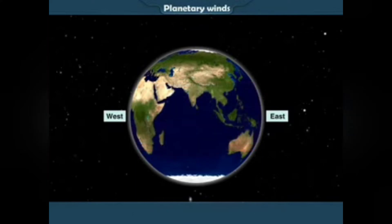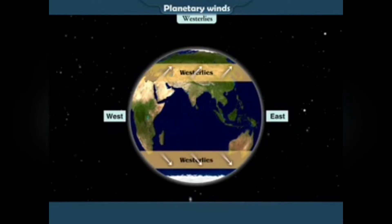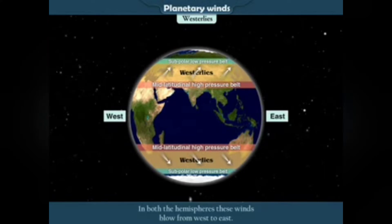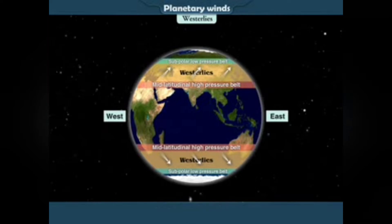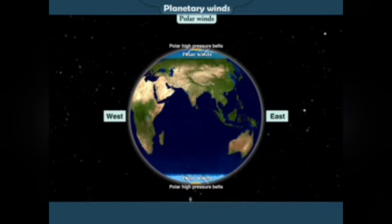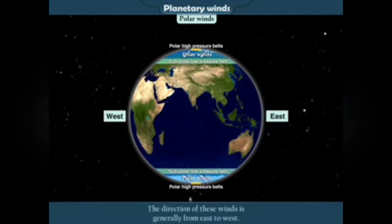b) Westerlies: The Westerlies blow regularly from the mid-latitudinal high pressure belt to the subpolar low pressure belt in both the hemispheres. These winds blow from west to east, that is why they are called the Westerlies. c) Polar winds: Winds that blow from the polar high pressure belts to the subpolar low pressure belts are called polar winds. The direction of these winds is generally from east to west.